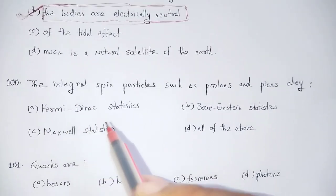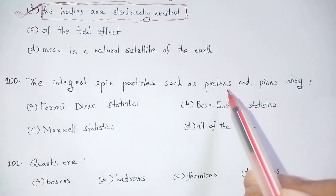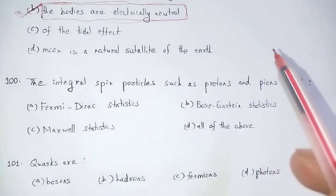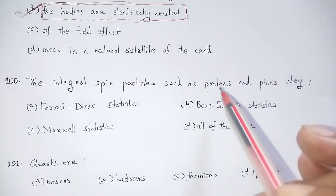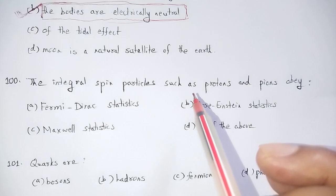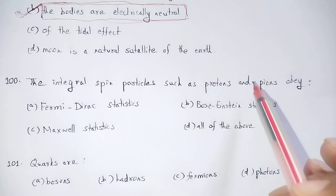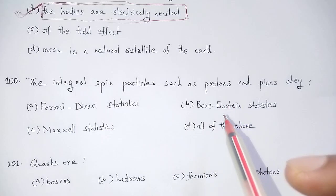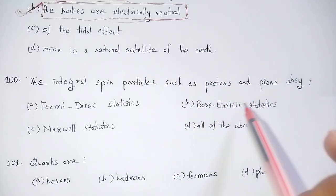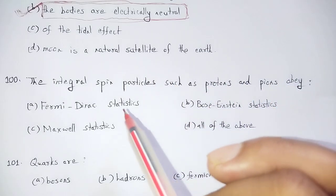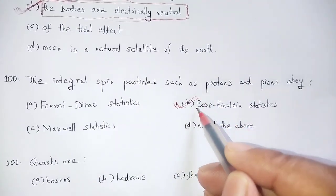Question number 100: Integral spin particles such as protons and pions — protons and pions are bosons. The particles can be described by Bose-Einstein statistics. The options are Fermi-Dirac, Bose-Einstein, Maxwell, or all of the above. Fermi-Dirac and Bose-Einstein statistics — Bose-Einstein statistics is the correct answer.